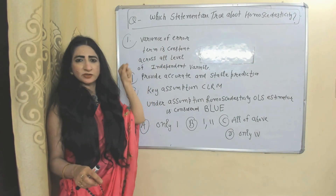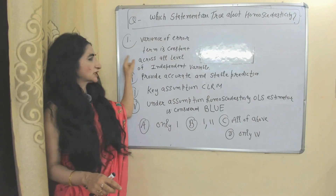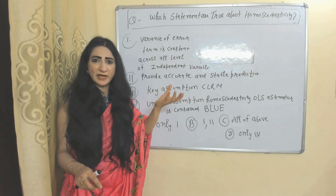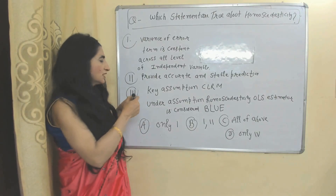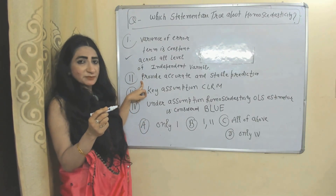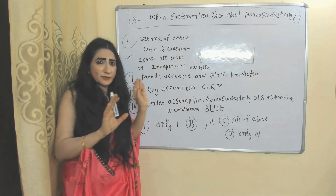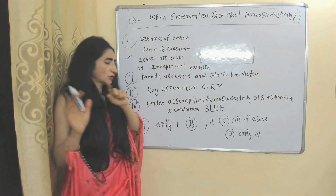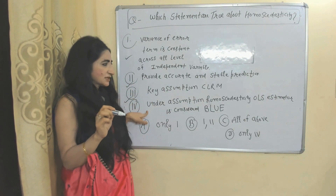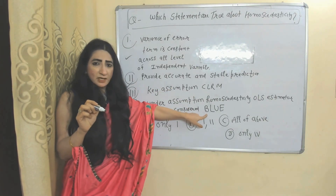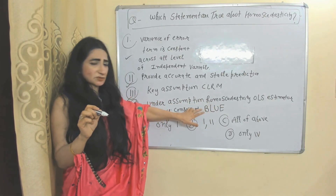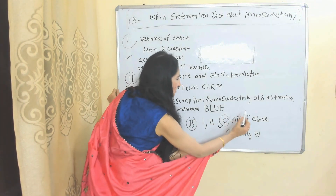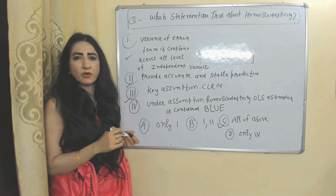MCQ Question 2: Which statement is true about homoscedasticity? (A) Variance of error term is constant across all levels of independent variable — correct. (B) Homoscedasticity provides accurate and stable predictions because variance of error terms is constant — also correct. (C) It is a key assumption of the classical linear regression model — correct. (D) Under homoscedasticity, OLS estimator is considered BLUE (Best Linear Unbiased Estimator) — also correct. Therefore, the right answer is C: all of the above statements are true.